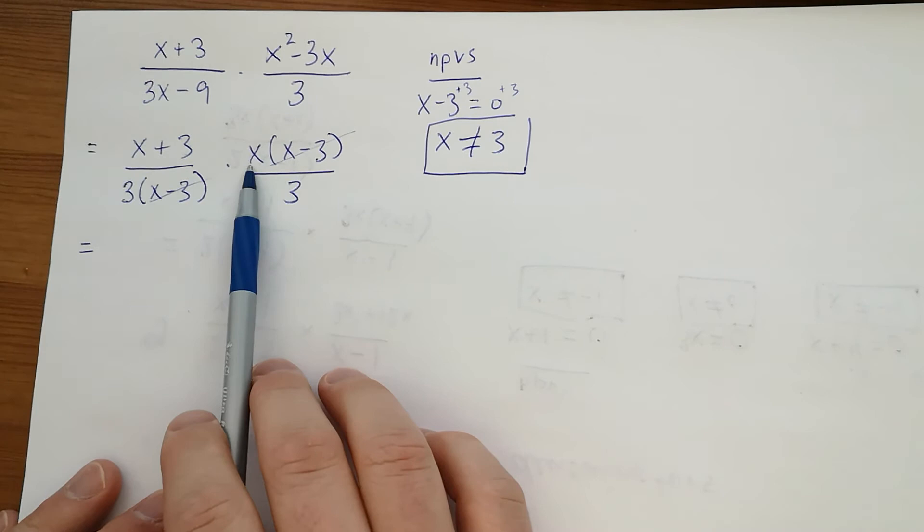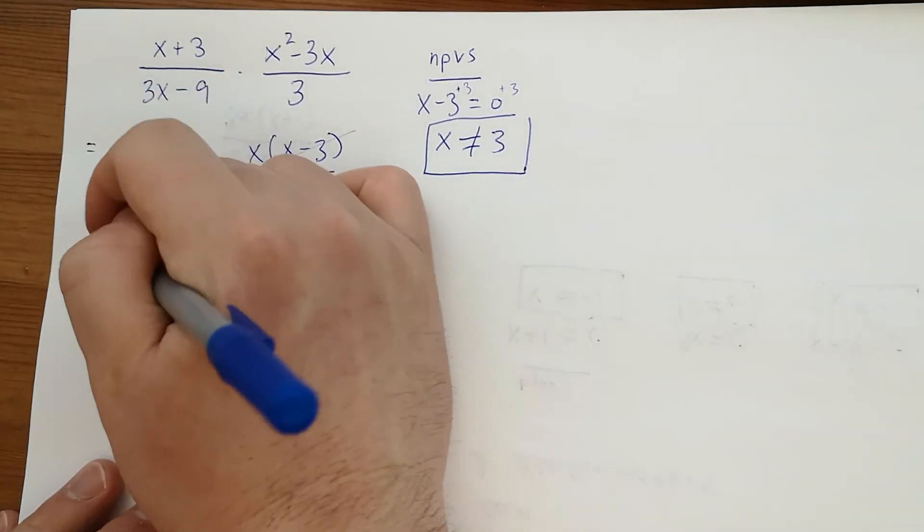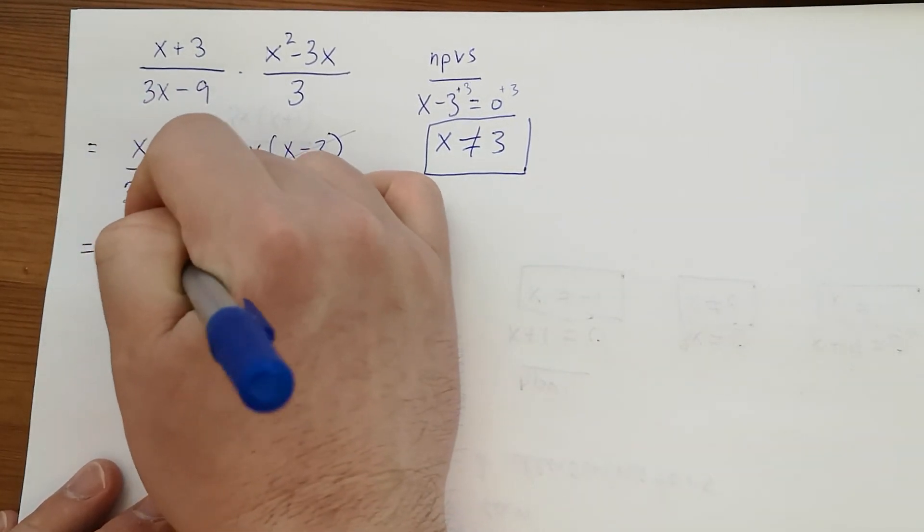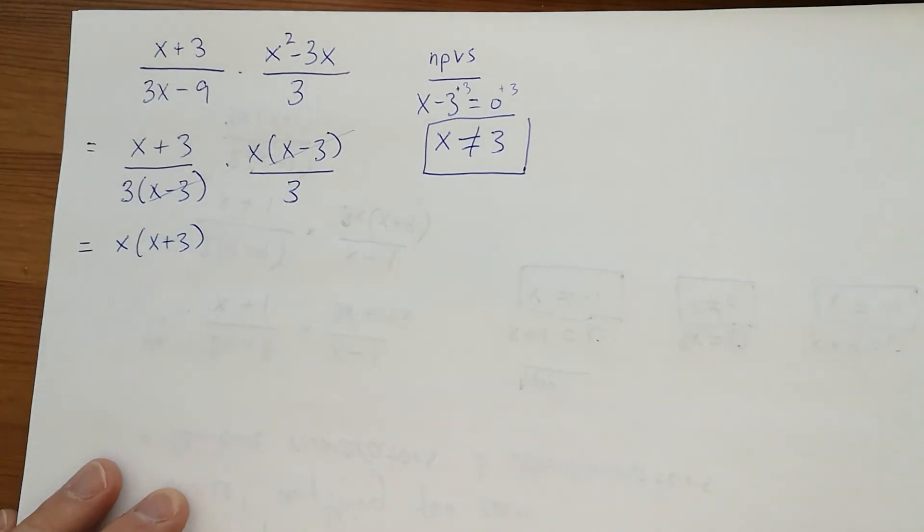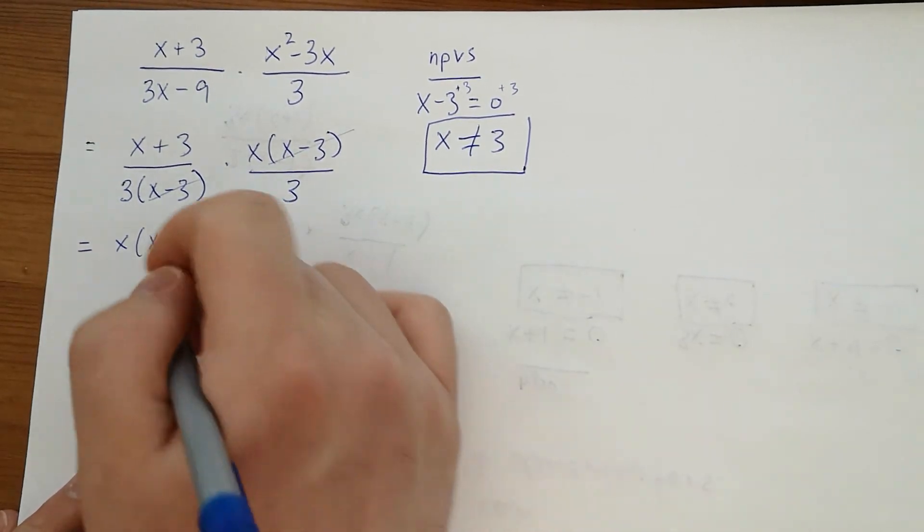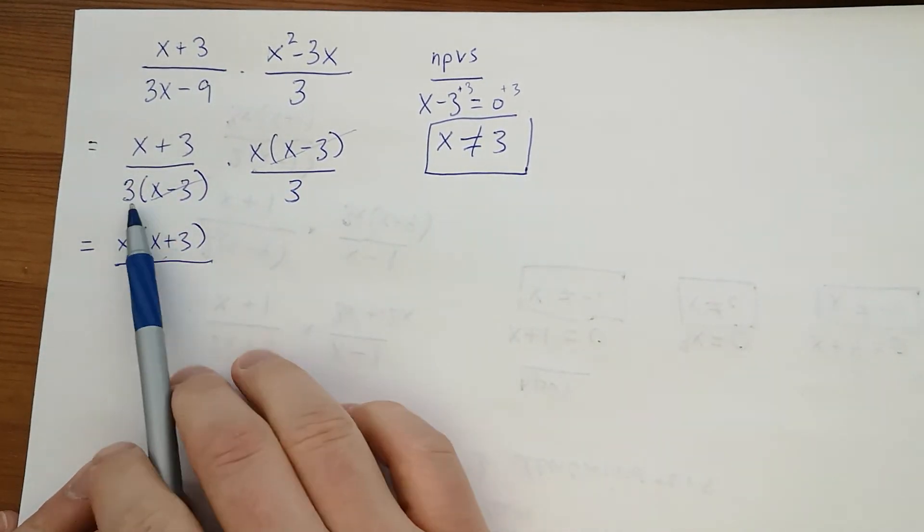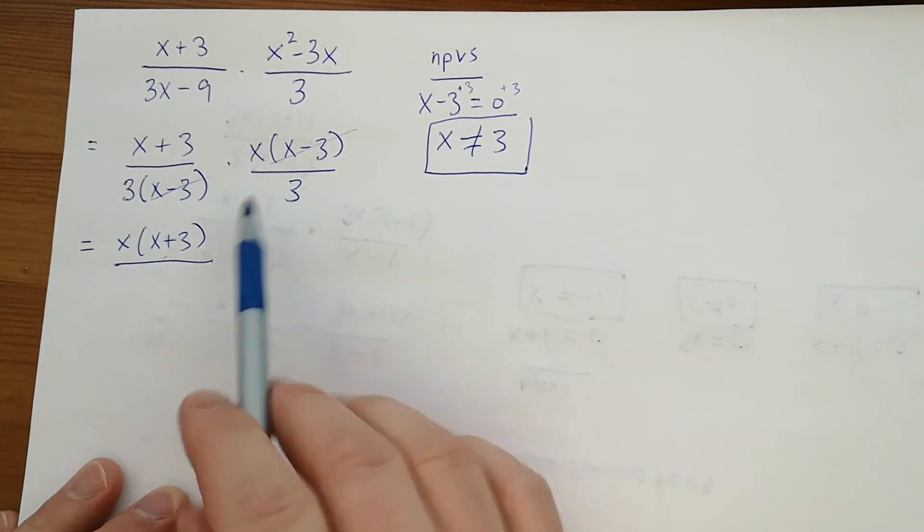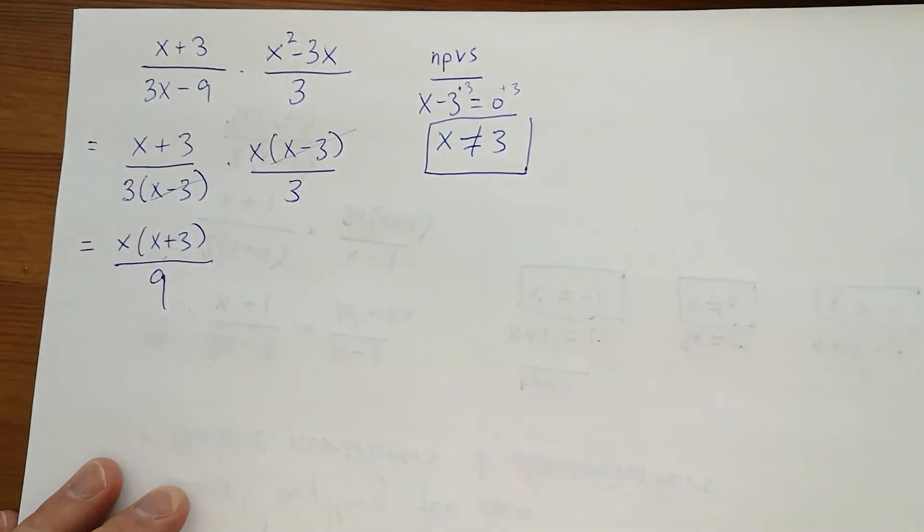Let's see what we've got. I have x times (x+3). Remember, binomials—things with a plus or minus sign—put them in brackets after any monomials. So x is a single term multiplied by (x+3). On the bottom, I have 3 times 3, that's 9. That's our solution: x(x+3)/9.